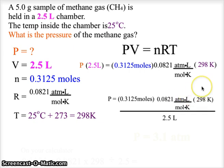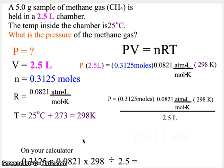Rearranging that algebraically, we end up with 0.3125 moles times 0.0821 times 298 divided by 2.5. On our calculator, we simply multiply the three values on the top and divide by the value on the bottom, and we end up with 3.1 as our atmospheric value for pressure using the ideal gas law.